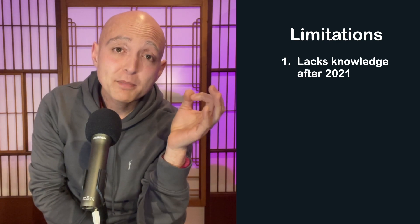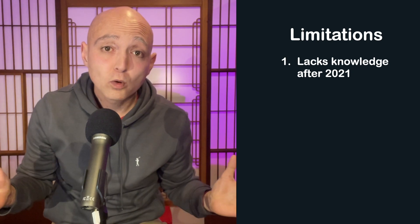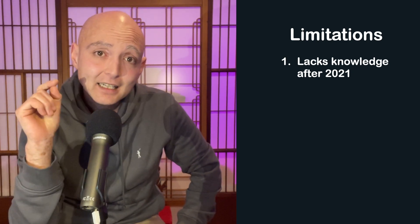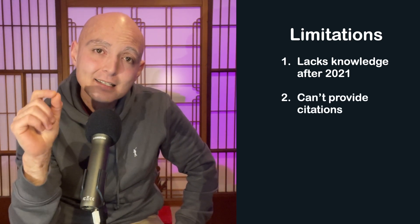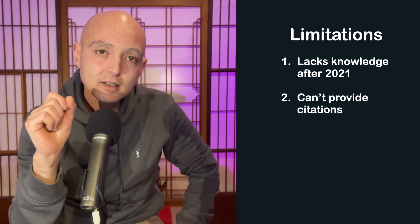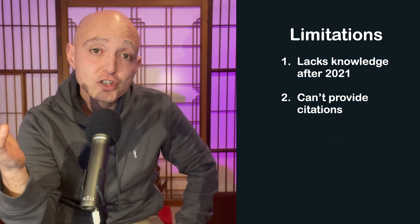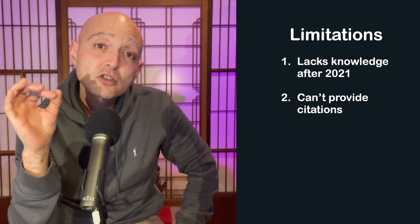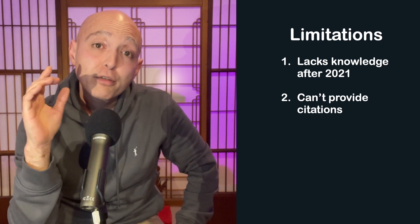ChatGPT has a limited knowledge of events after 2021 — it doesn't know about the war in Ukraine or that Argentina won the 2022 FIFA World Cup. Second, it usually can't provide citations because its text is newly synthesized. If you need citations, I'd recommend using a traditional search engine like Google, though ChatGPT can still give you a useful overview of a topic to start from.